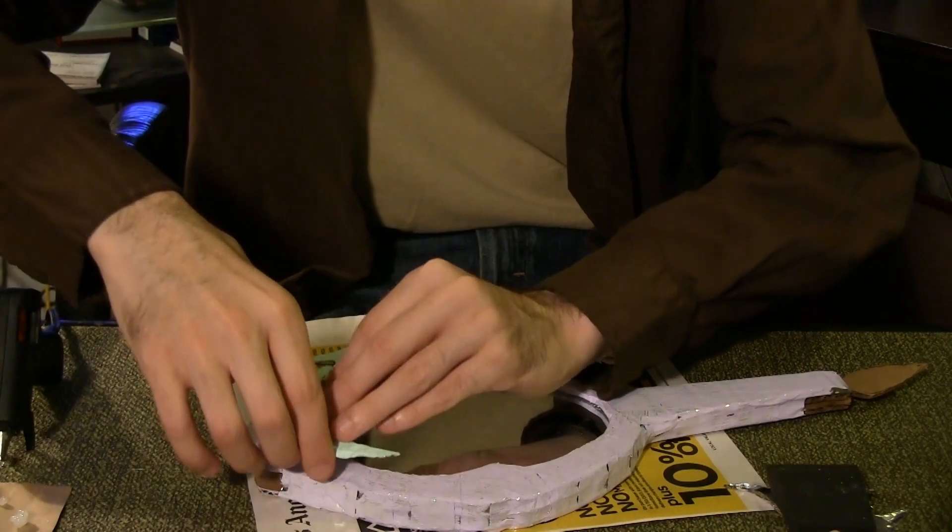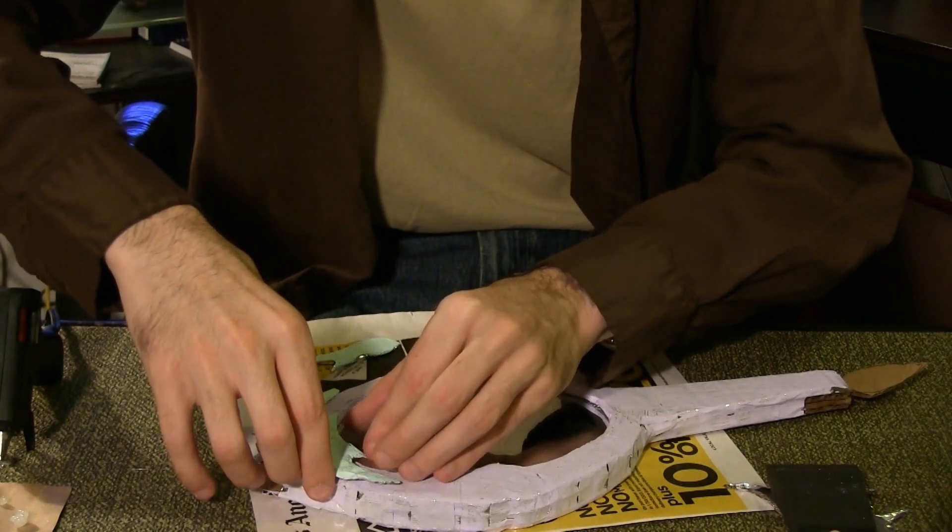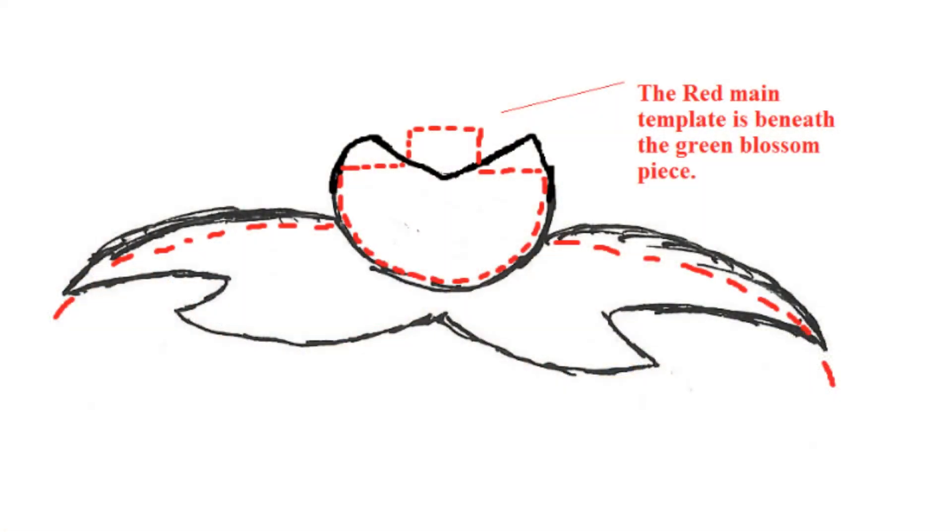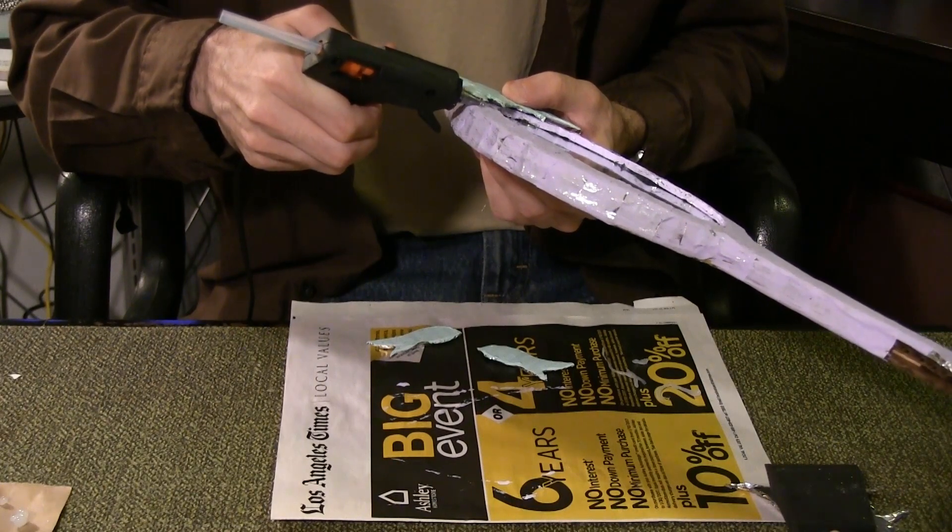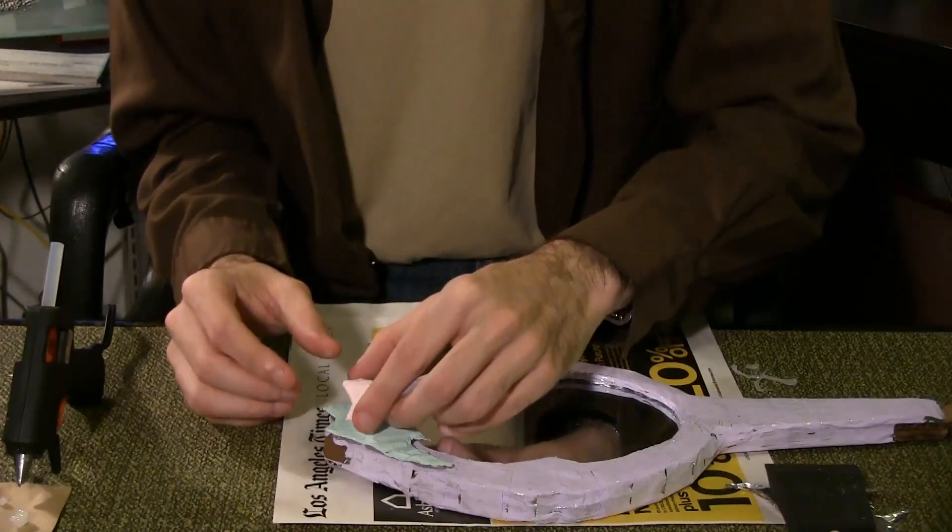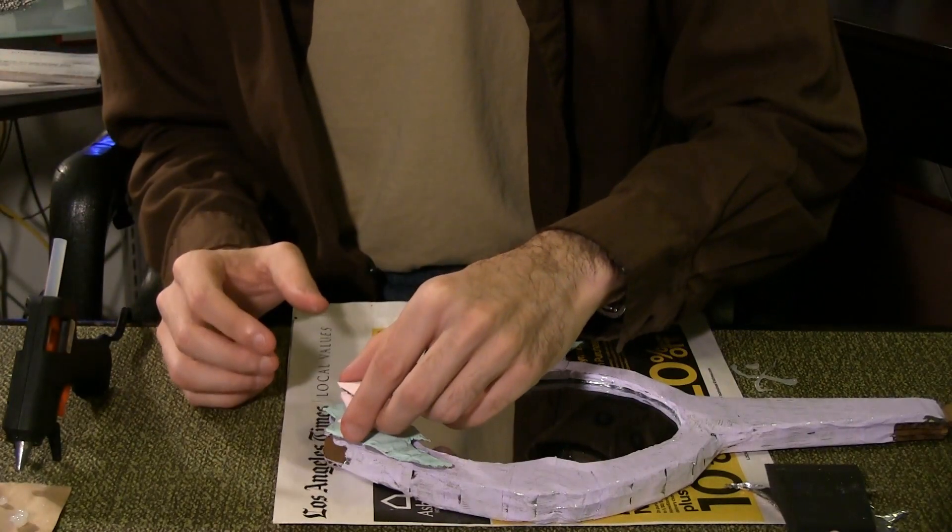Use hot glue to attach the front blossom piece to the top of the mirror. The blossoms should line up as shown. Once it's attached, fill in gaps between the piece and the mirror with hot glue. Attach the second and third blossom pieces and fill in the gaps with hot glue.